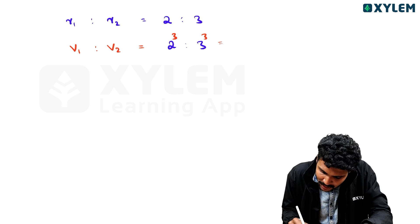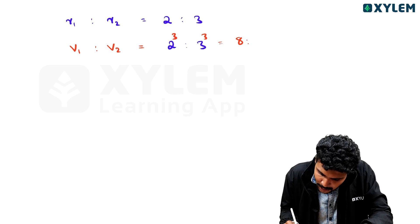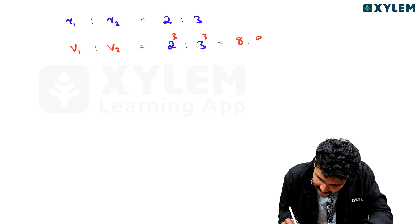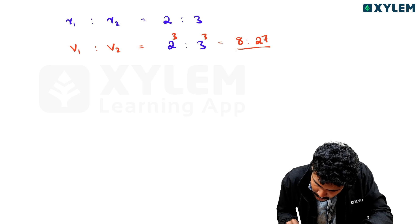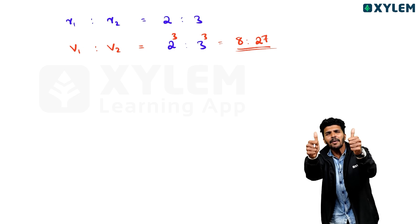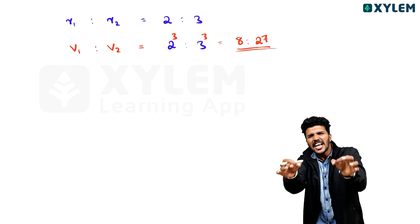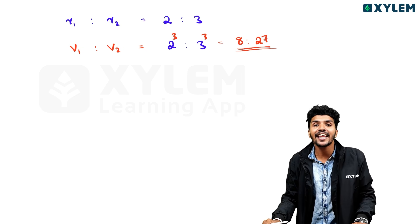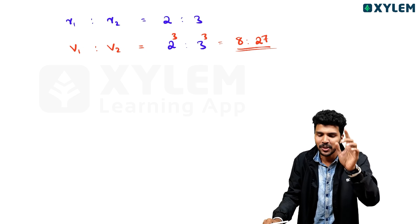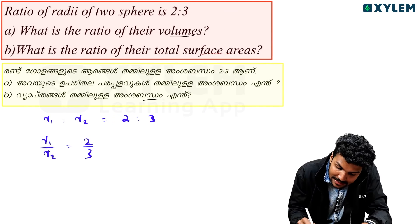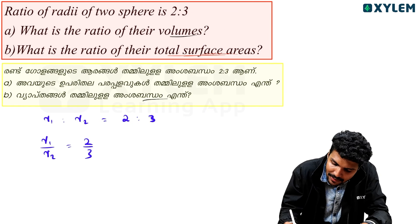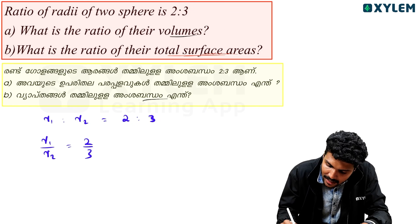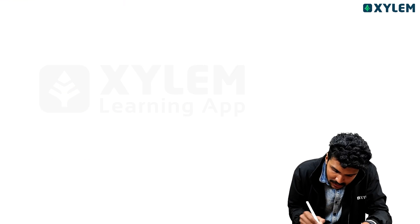The volume ratio is the radius ratio cubed. So 2 cube is to 3 cube. It's about 3 cube is to 2 cube.